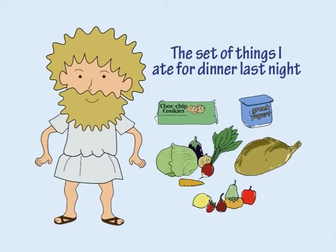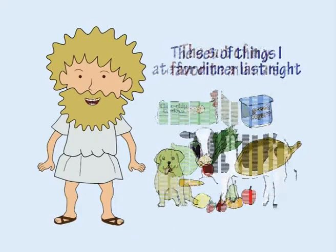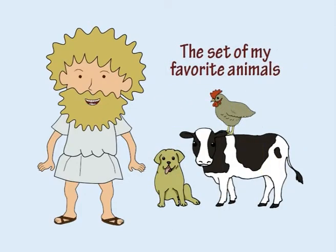These elements can include anything at all. For example, this is the set of things I ate for dinner last night. And this is the set of my favourite animals.